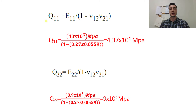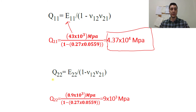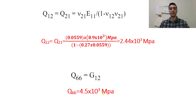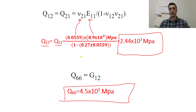So let's start with the calculation of Q-values. Q-1-1 is equal to E-1-1 divided by 1 minus the product of Poisson ratios, and Q-1-1 is calculated here. Q-2-2 is calculated according to its formulation using E-2-2. Q-1-2 is calculated using the Poisson ratio and elastic modulus, and Q-1-2 is equal to Q-2-1. Q-6-6 is equal to G-1-2, and its value is shown here.